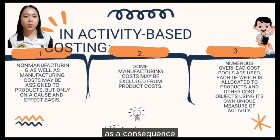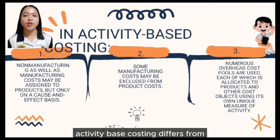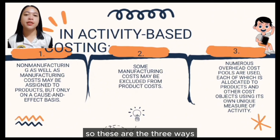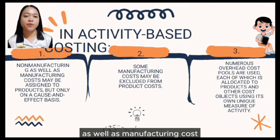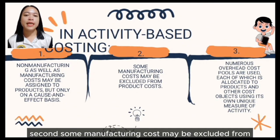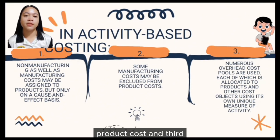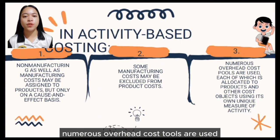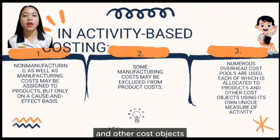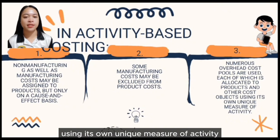Activity-Based Costing differs from traditional cost accounting in three ways. First, in ABC, non-manufacturing as well as manufacturing costs may be assigned to products, but only on a cost-and-effect basis. Second, some manufacturing costs may be excluded from product costs. Third, numerous overhead cost pools are used, each allocated to products using its own unique measure of activity.